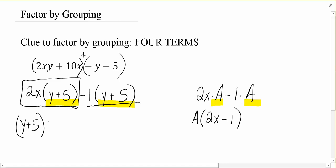Just the 2x. When I factor the y plus 5 out of the second term, what's left? Just the negative 1. And so that's how we factor by grouping.